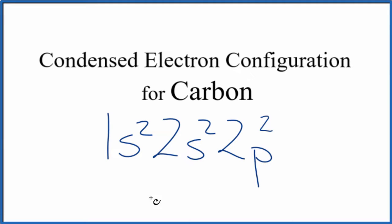So we have our full electron configuration, but with condensed electron configurations, what we want to do is have that highest energy level. That would be the second energy level right here. This is our highest energy level. We want that on the end, and then we condense the energy levels beneath it.